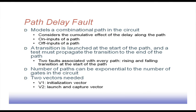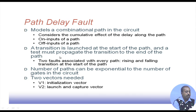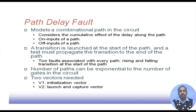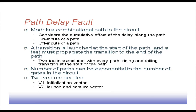For a path, there are on-inputs — inputs affecting gates on the path — and off-inputs, which feed other inputs and do not affect the path. A transition is launched at the start of the path and a test must propagate the transition to the end of the path; other inputs must be set to proper values to facilitate this. There can be two types of faults associated with every path: rising transition and falling transition. Rising delay and falling delay are normally not the same for any logic gate and must be taken separately.